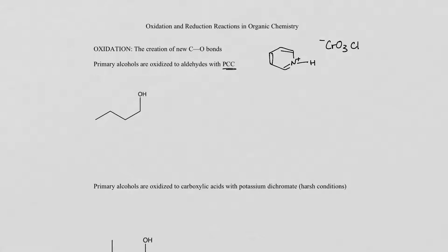Primary alcohols are oxidized with pyridinium chlorochromate, or PCC. Primary alcohols are oxidized to aldehydes with PCC. We draw a reaction arrow, react with PCC — no need to learn the mechanism for this process. We know that the primary alcohol is oxidized to the aldehyde. Make sure we didn't lose any carbons: one, two, three, four on each side. Still have our oxygen and hydrogen. It's just now we have an additional carbon-oxygen bond, so that is an oxidation process.